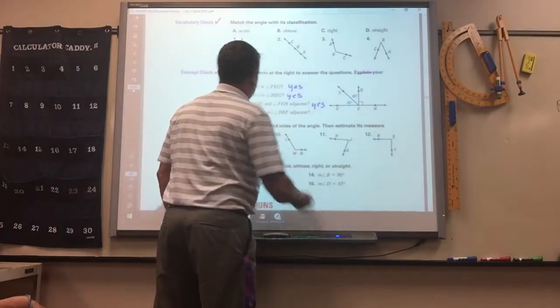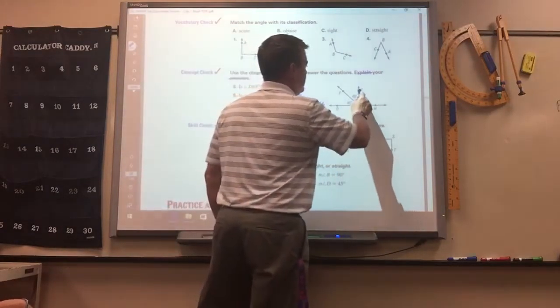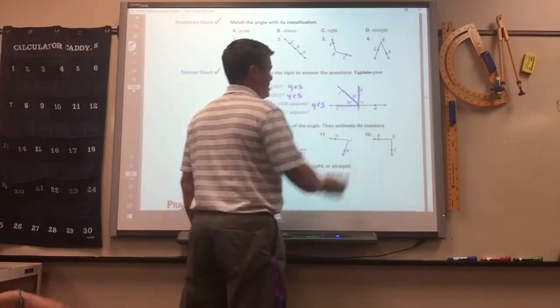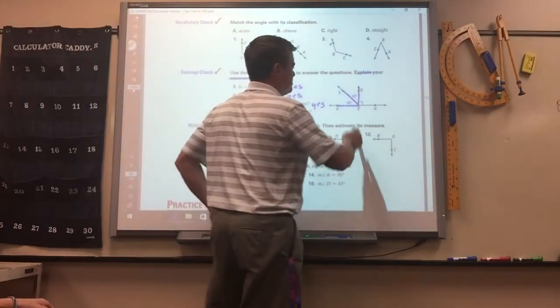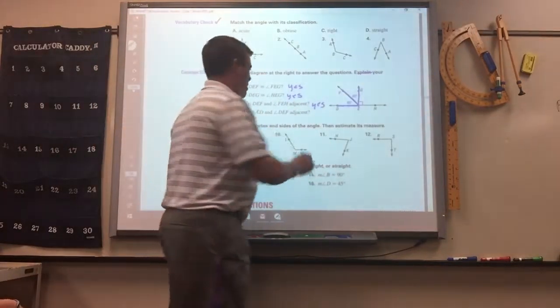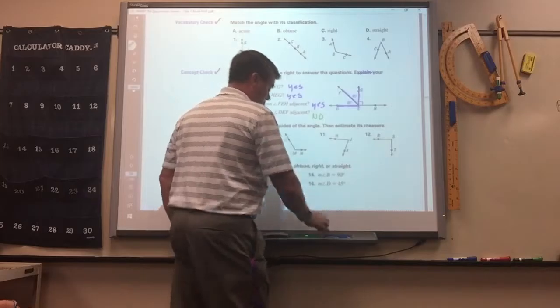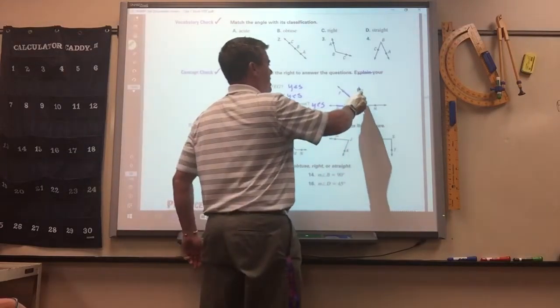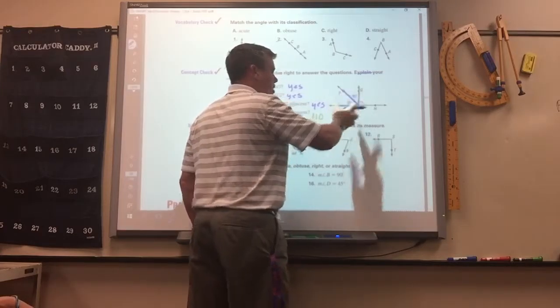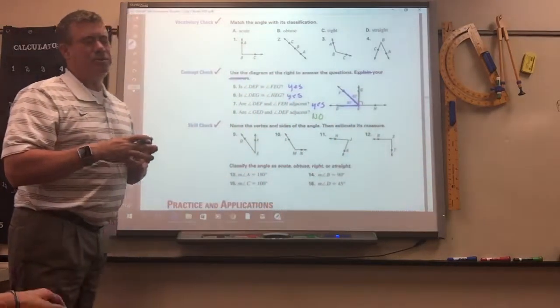Number eight, are angle GED and DEF adjacent. Yes. Are they next to each other? No. No, one's inside the other. Because angle GED is right there, and DEF is there. One's inside the other. They're not next to each other.